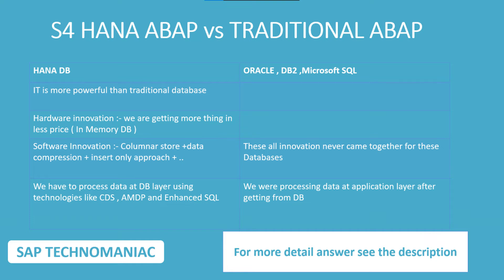We can store the data in column store, compress the data more efficiently, and SAP uses an insert-only approach. With those kinds of innovations, they came up with HANA, so the HANA database became more powerful.